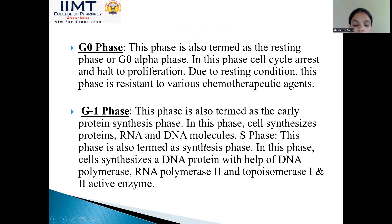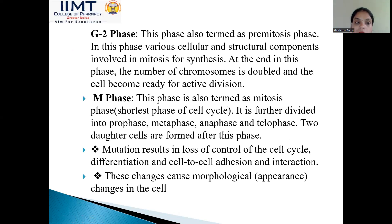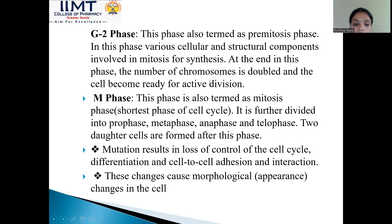The G1 phase is the protein synthesis phase, where the cell synthesizes protein, DNA, and RNA molecules. The S phase is the synthesis phase, where the cell synthesizes DNA protein with the help of DNA polymerase, RNA polymerase, and topoisomerase enzyme. The G2 phase is the pre-mitosis phase, where cellular and structural components involved in mitosis are synthesized, chromosomes are doubled, and cells become ready for active division. The M phase is mitosis — the shortest phase of the cell cycle — further divided into prophase, metaphase, anaphase, and telophase, resulting in two daughter cells. Due to mutation, there is a loss of control of the cell cycle, differentiation, and cell-to-cell adhesion.